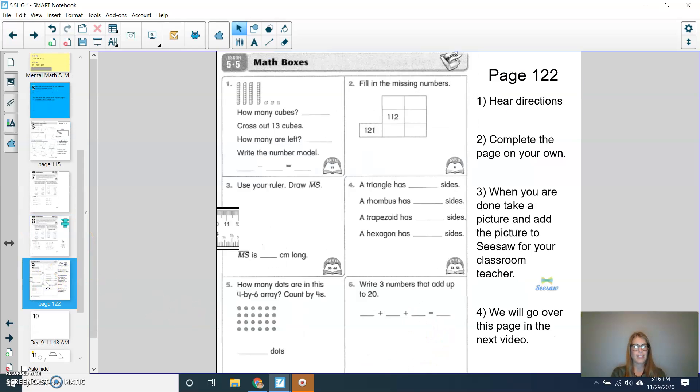The last thing that we'll do today is take a look at our math boxes, which is page 122. If you're noticing that, or once you're all done, if you can take a picture and add the picture to Seesaw for your classroom teacher, and we will go over this page in our next video. For question one, how many cubes? And then once you figure out how many, cross out 13 of those cubes and tell me how many are left, and then give a number model. Fill in the missing numbers for number two.